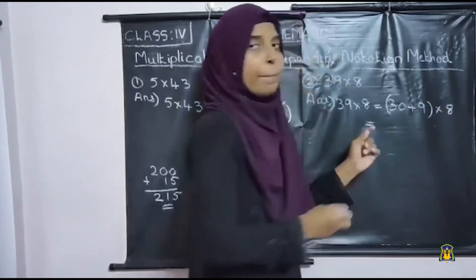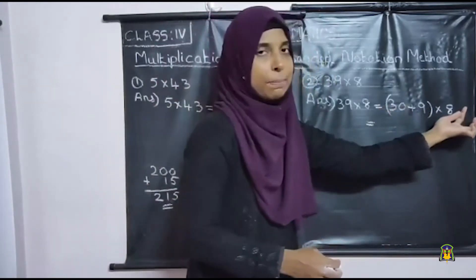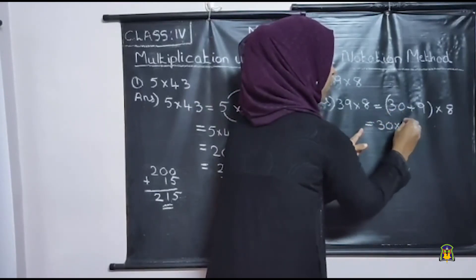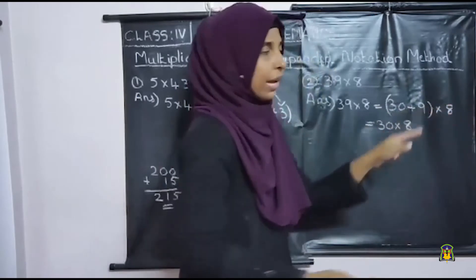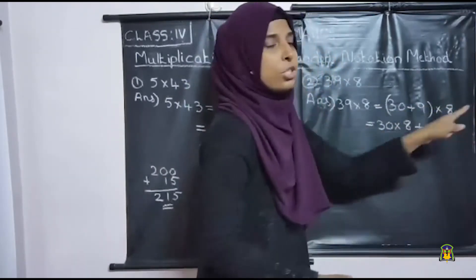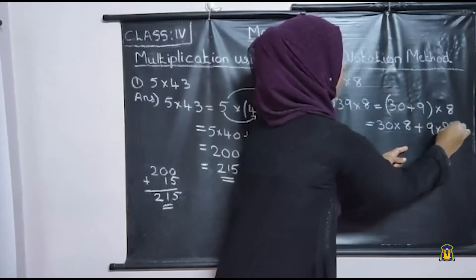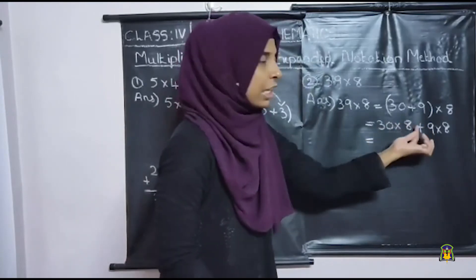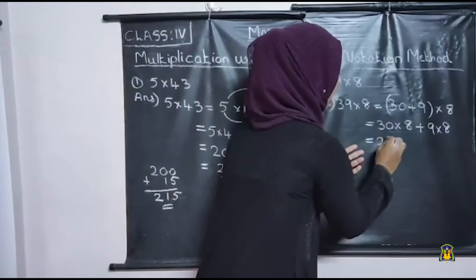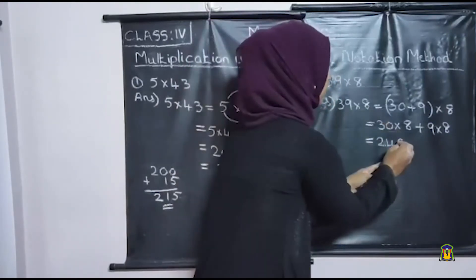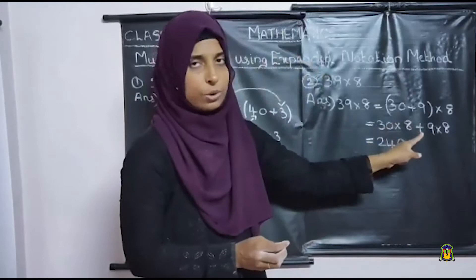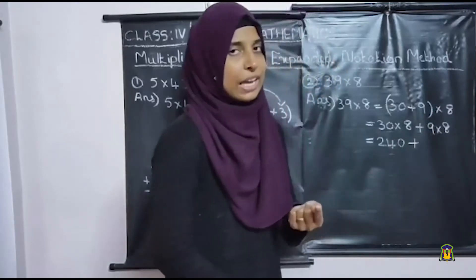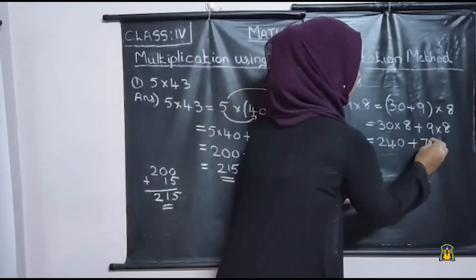Next we want to multiply each term separately by 8. So first 30 into 8, then plus 9 into 8. How is 30 into 8? First 3 into 8 is 24. Then there is one zero, so put one zero here. So 30 into 8 is 240. Then plus: what is 9 into 8? 9 into 8 is 72. So we can write 72.